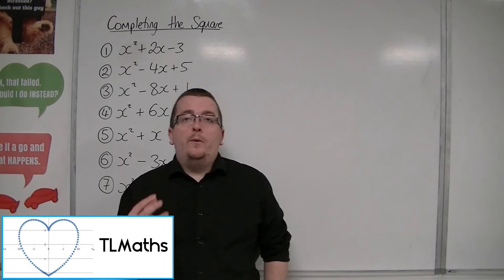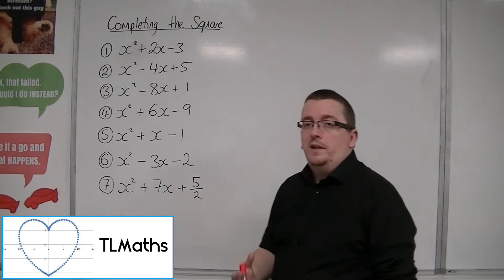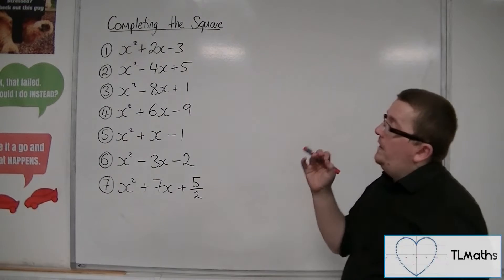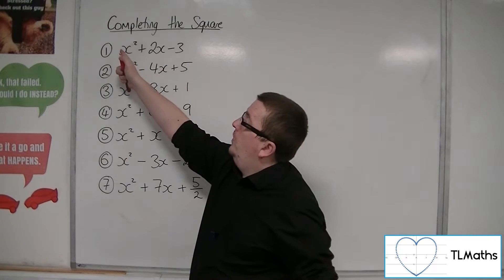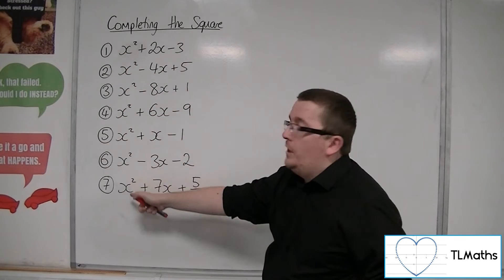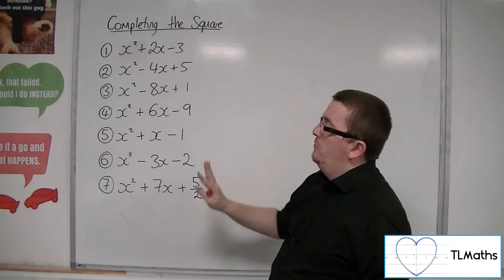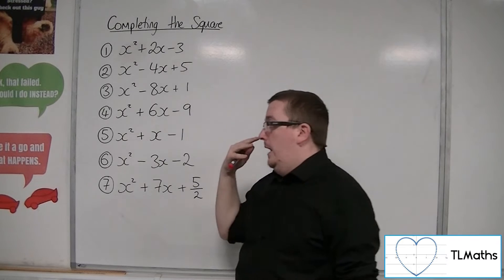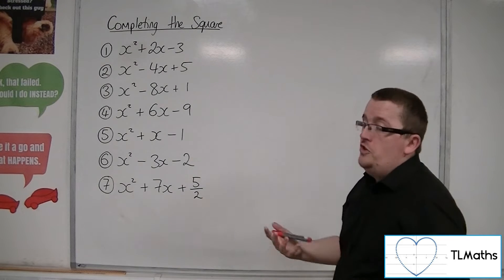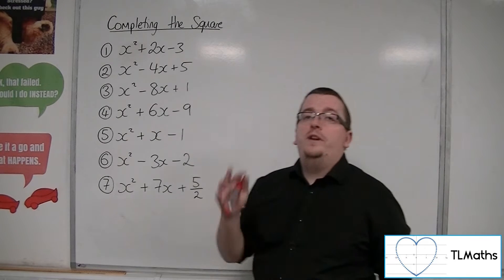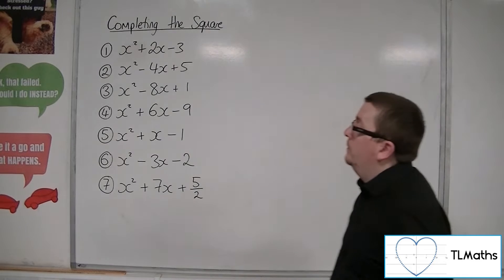In this video we're going to be going through some examples of completing the square. In all of these cases you'll notice that we've got only 1 as the coefficient of x squared. You may be asked to deal with problems where it's not 1, and we are going to deal with that in a later video.